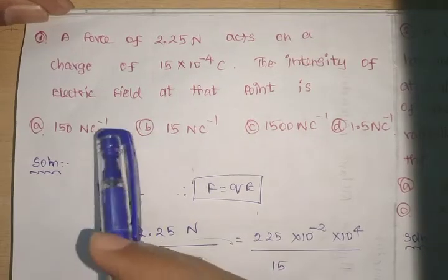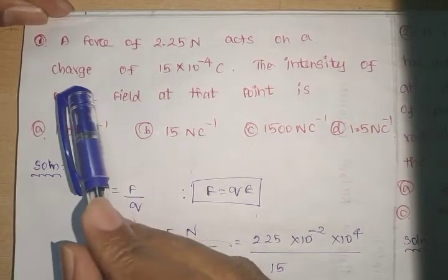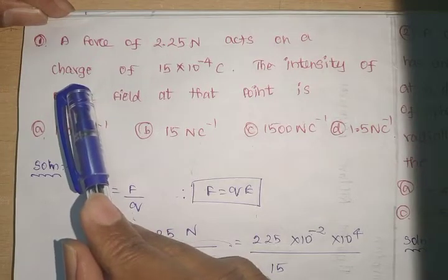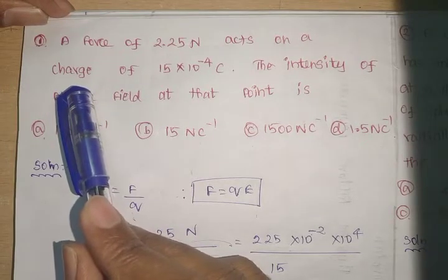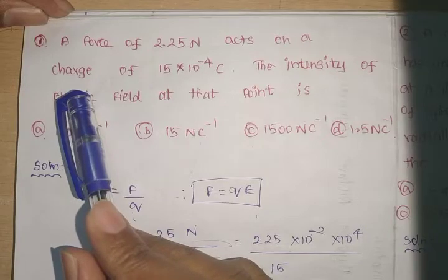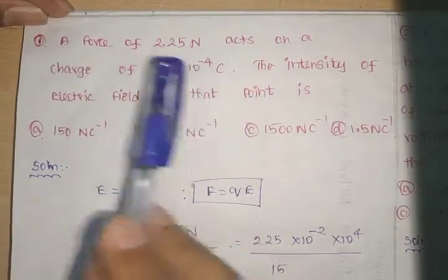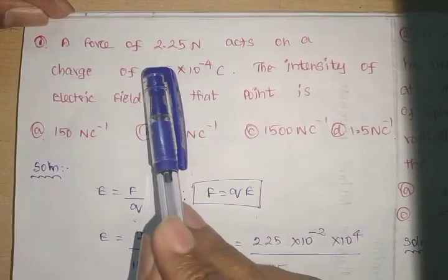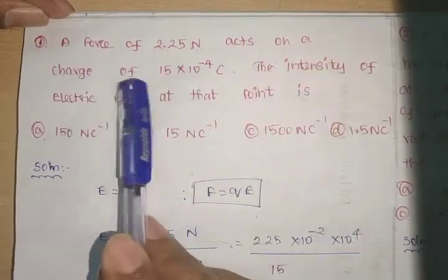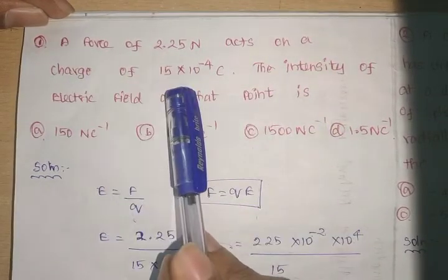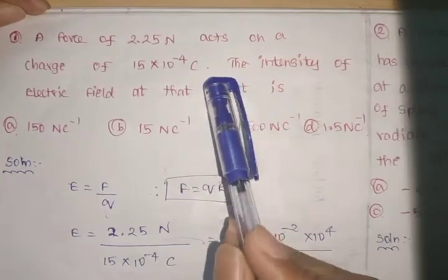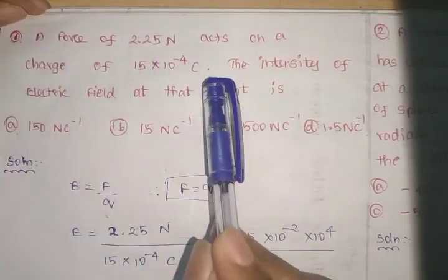Hello friends, welcome back to Educate Key. Today we are going to see one nice problem in the electrostatics chapter related to NEET examination for physics. The given question is: a force of 2.25 Newton acts on a charge of 15 × 10^-4 Coulomb.